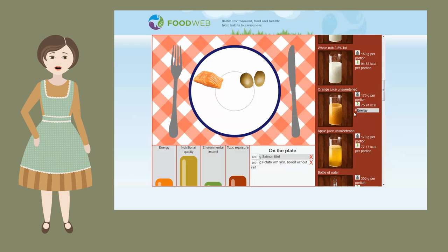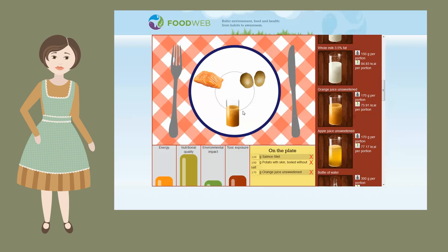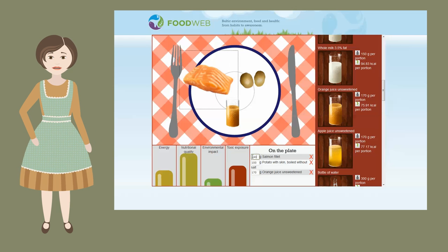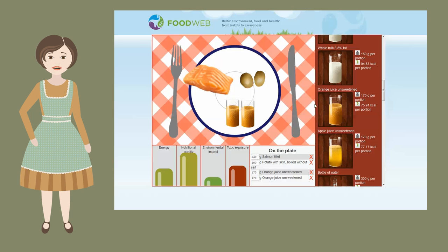You can change the amount of a food item in the box on the plate. The amount may range from one gram to double the initial portion weight. If you want to increase the portion of your choice, drag more food items to the plate.